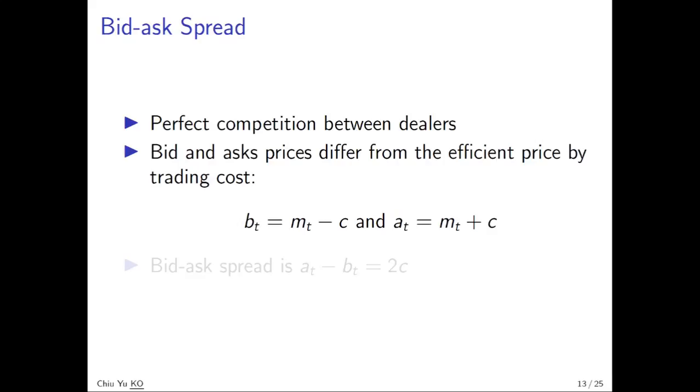Similarly, the selling price b will be the price that you can only sell at a price that is exactly c lower than the efficient one. Suppose someone is trying to set the price somewhat slightly below it, then the dealer can say, I can allow you to sell it a little bit higher. So when competition occurs, then you will make sure that there's no profit margin there. So that's why no one can make profit at these two prices. And because of this, the bid-ask spread is defined as a_t minus b_t equal to 2c.